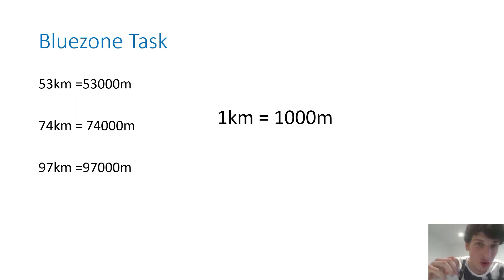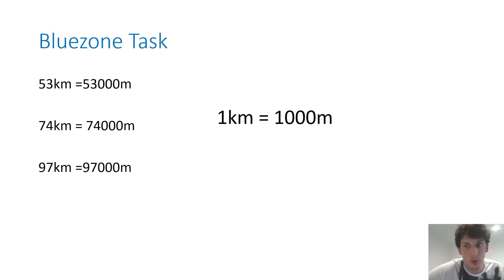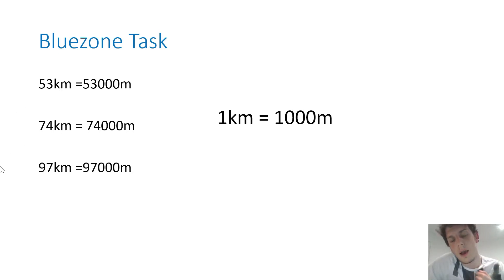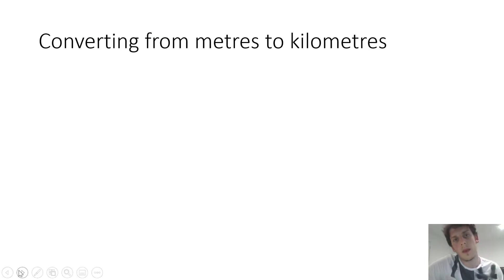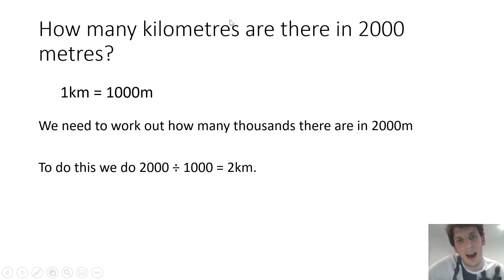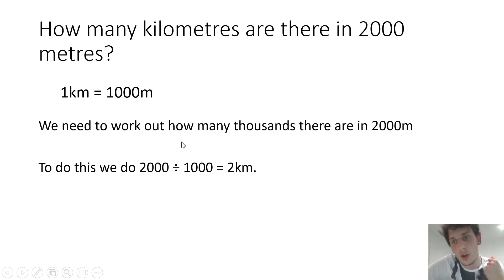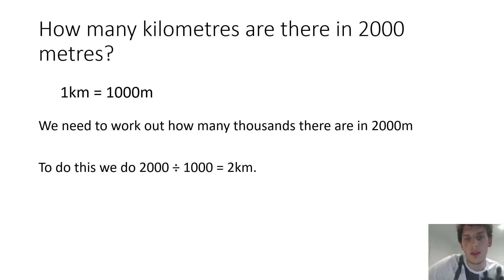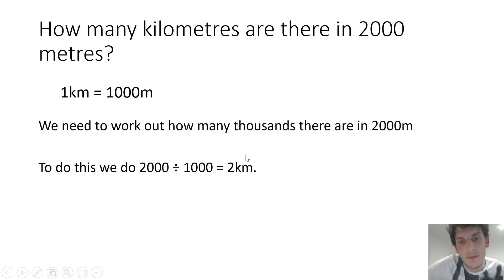If you struggled with that, please don't worry — make sure you send me an email so I can provide you with that extra support. Welcome everybody back to the second part of our lesson. In the first part we were finding out how many meters there are in different amounts of kilometers. In the second part of the lesson, we're going to do the opposite — we're going to find out how many kilometers there are in different amounts of meters. Here's an example: I've got 2,000 meters. One kilometer is equal to 1,000 meters, so to work out how many kilometers there are in 2,000 meters, we do 2,000 divided by 1,000, which equals 2. So in 2,000 meters, we have 2 kilometers.